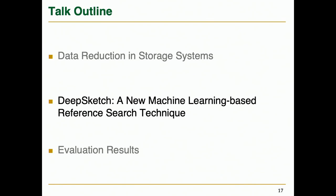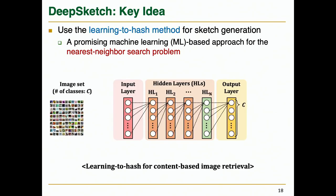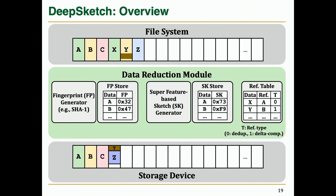Next, I will introduce DeepSketch, focusing on its key idea. Our key idea is simple: we use the learning-to-hash method, a promising machine learning-based approach for the nearest neighbor search problem. A popular learning-to-hash method trains a deep neural network to classify a given image set and uses the last hidden layer to generate a binary hash value of an input image. If two images are similar enough to have the same inference results, the activations in the last hidden layer are also likely to be similar, and so are their hash values. Basically, DeepSketch replaces the existing super feature-based sketch generator with a DNN-based sketch generator.